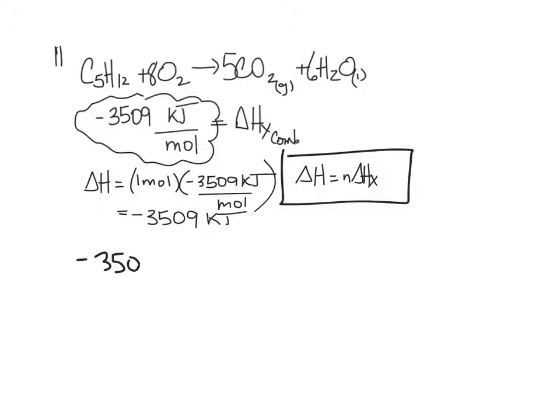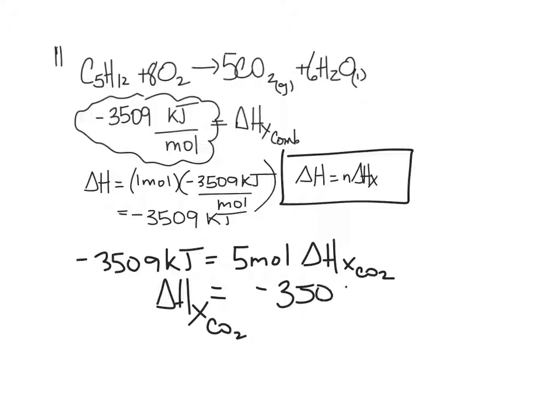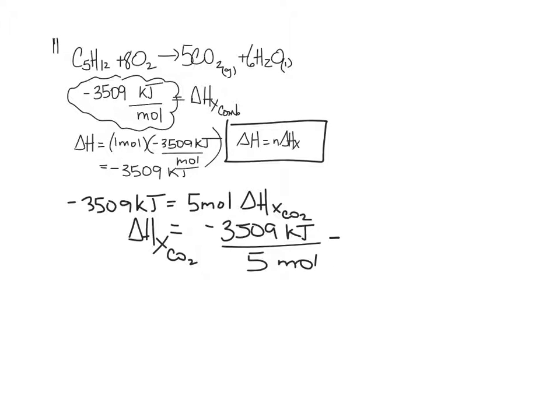So, minus 3509 kilojoules. Are you supposed to do it for carbon dioxide and water? And oxygen. So, all of them. Okay. So, I'll do it for carbon dioxide. So, five moles, delta HX for CO2. Equals negative 701.8 kilojoules per mole.